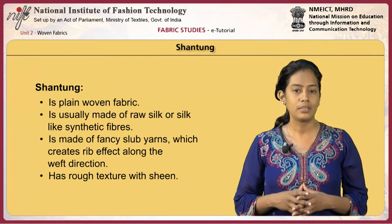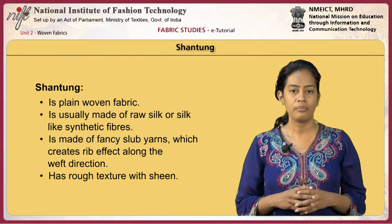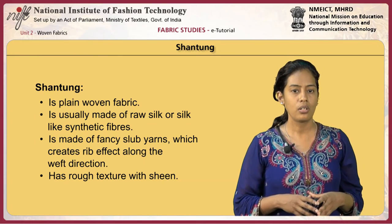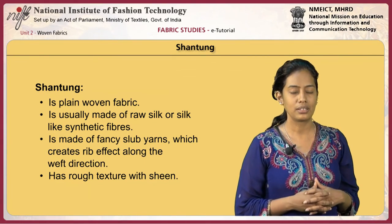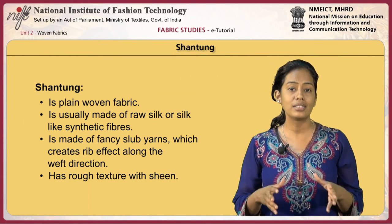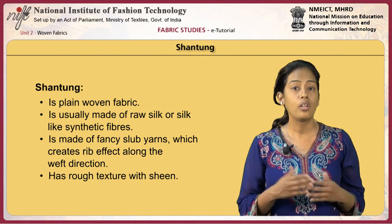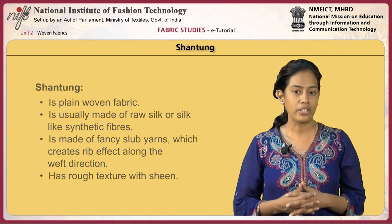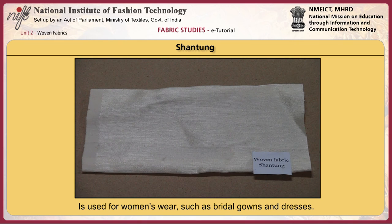Shantung is a plain woven fabric usually made of raw silk or silk-like synthetic fibres. It is made of fancy slub yarns which create a rib effect along the weft direction. It has a rough texture with sheen and is used for women's wear such as bridal gowns and dresses.